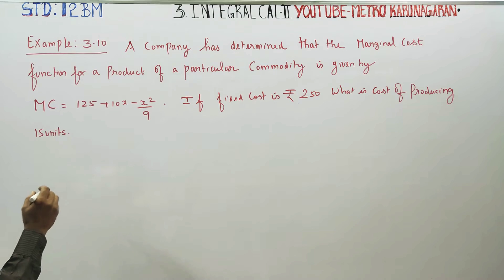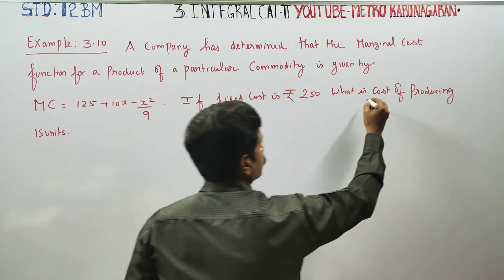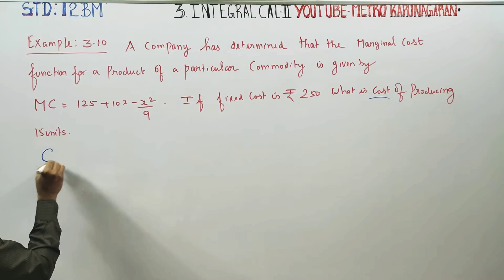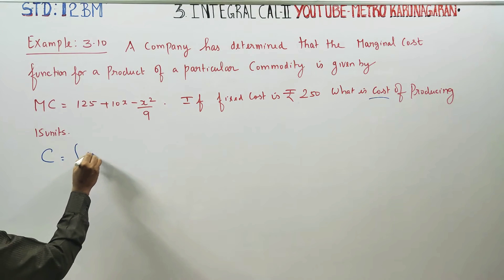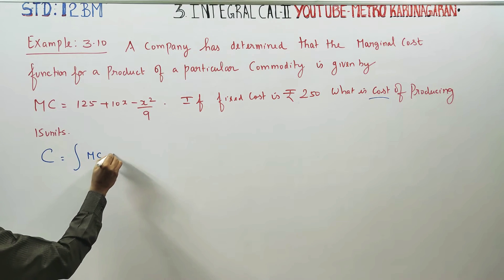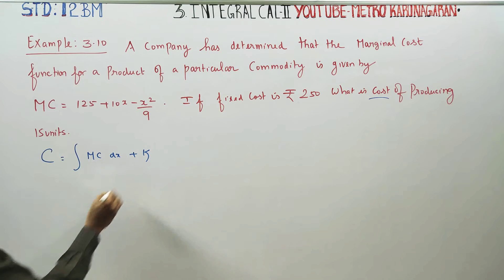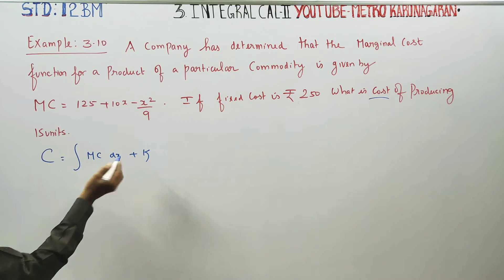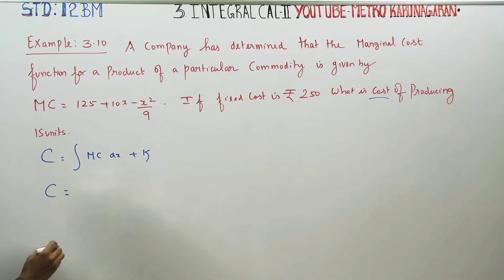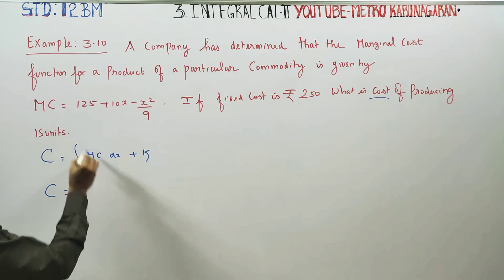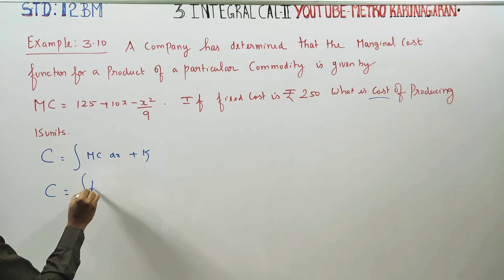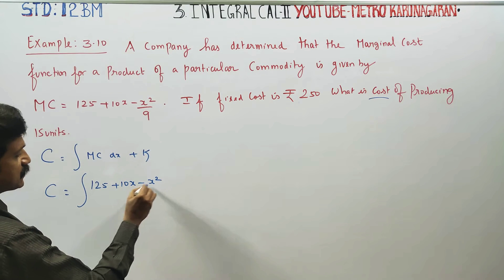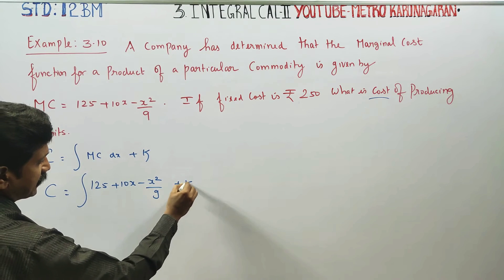If you find the cost, cost is given by the formula: integration of MC dx plus K. Marginal cost integrated gives the cost. Cost is equal to the integration of marginal cost, which is 125 plus 10X minus X squared by 9, plus K.